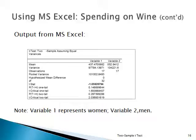Looking at the Excel printout, variable 1 was the women and variable 2 was the men. The mean is $437.47 for women and $552.94 for men. The variance for women is $97,784.14. We see 17 observations for each group. The pooled variance — computed by the computer — is 101,002.85, which is between the variance for the women and the variance for the men. The hypothesized mean difference is zero, which is another way of saying mu1 equals mu2. The degrees of freedom is 32, since 34 minus 2 equals 32.